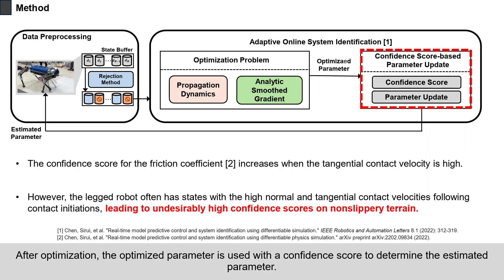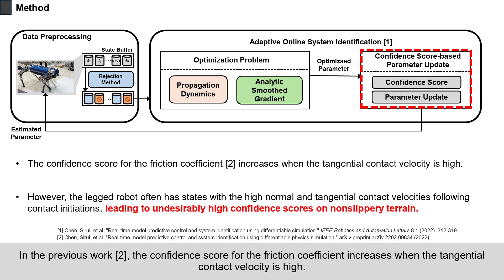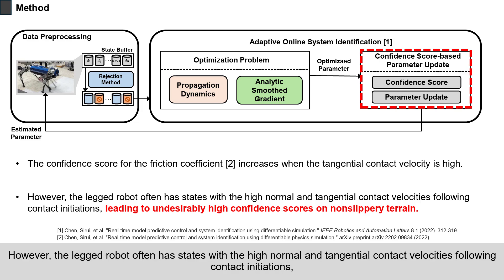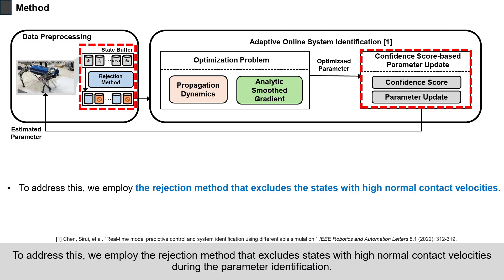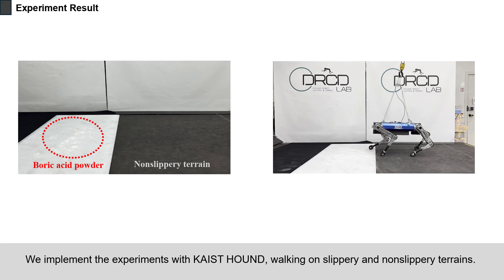After optimization, the optimized parameter is used with a confidence score to determine the estimated parameter. In the previous work, the confidence score for the friction coefficient increases when the tangential contact velocity is high. However, legged robots often have states with high normal and tangential contact velocities following contact initiations, leading to undesirably high confidence scores on non-slippery terrain. To address this, we employ a rejection method that excludes states with high normal contact velocities during parameter identification. We implement experiments with Kaist-Hound, walking on slippery and non-slippery terrains.